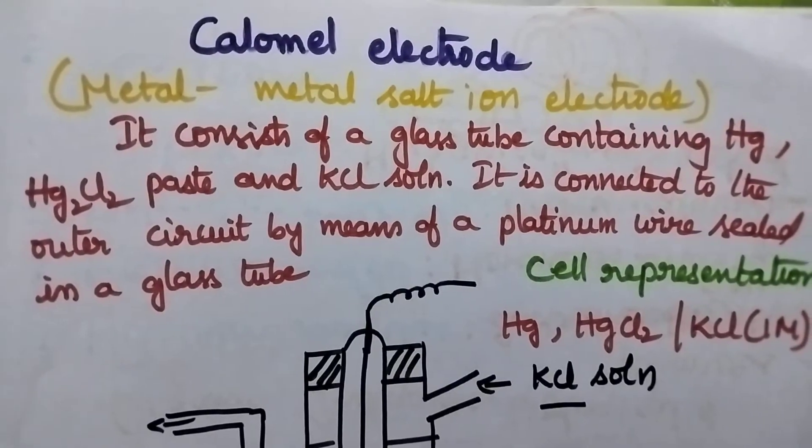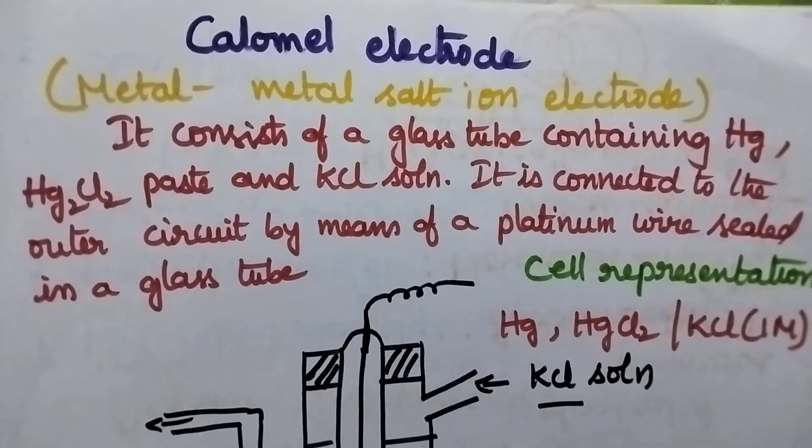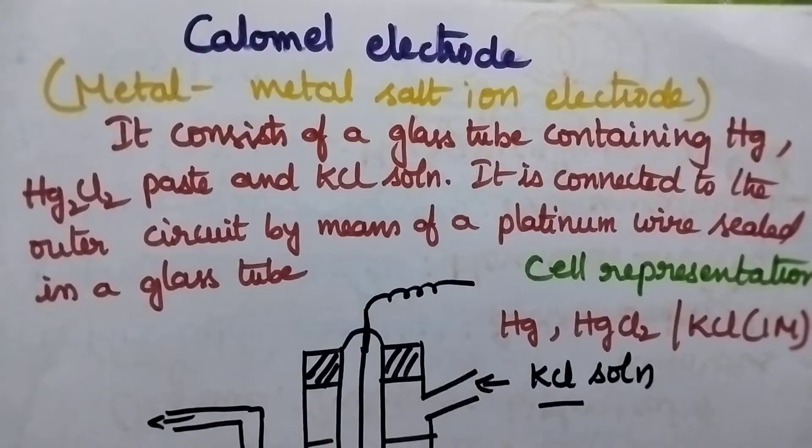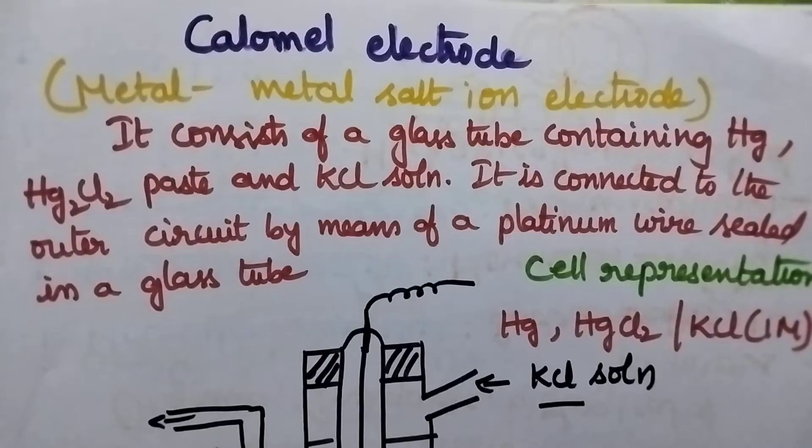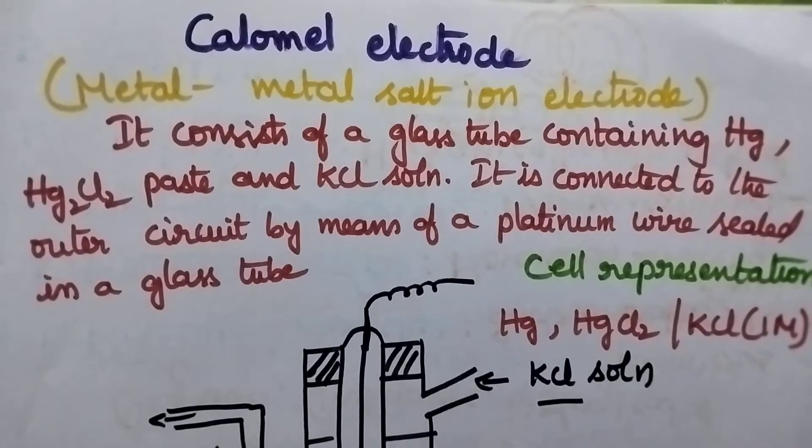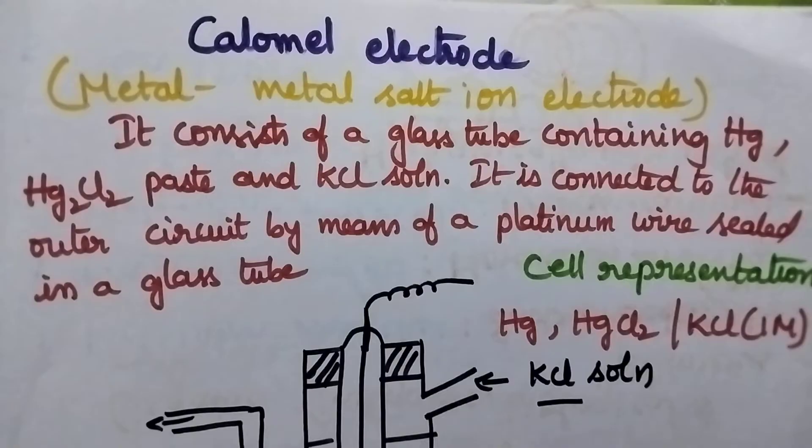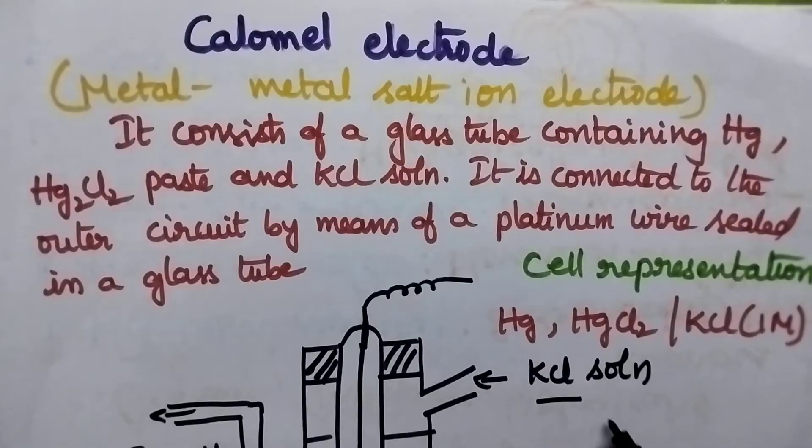Hello students, welcome back to my channel. In this video, I am going to discuss in brief about the calomel electrode, which is a good example for metal-metal salt ion electrode. It is also called a secondary standard electrode, so it is highly useful to measure the electrode potentials of other electrodes. It is also a reversible electrode.